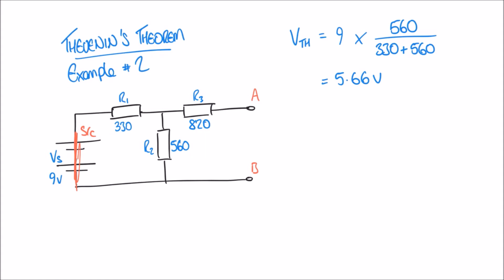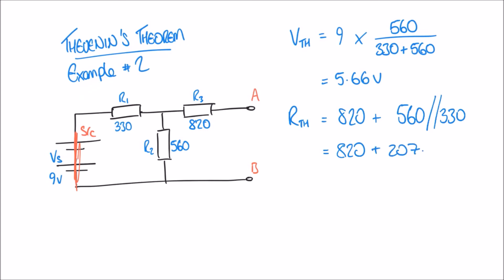The Thevenin resistance equals 820 plus 560 in parallel with 330 — where the double slash is shorthand for parallel resistors. The parallel combination of 560 and 330 comes to 207.64 ohms. So the total is 820 plus 207.64, giving a Thevenin resistance of 1027.64 ohms.